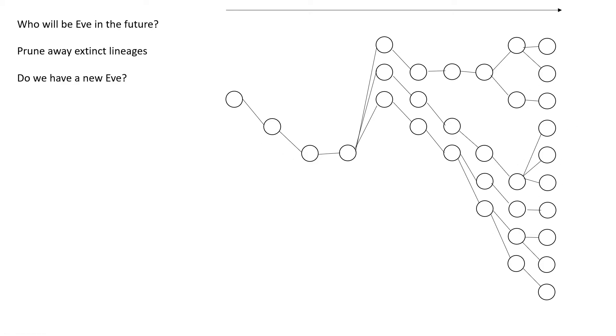Well, we prune away the individual, the lineages that have gone extinct. And now look, suddenly we have a new Eve right here.